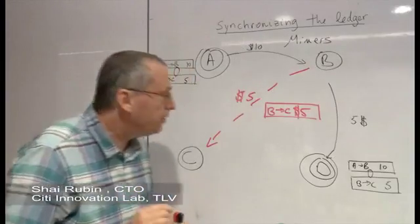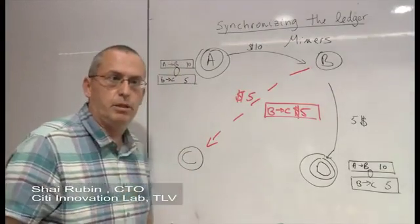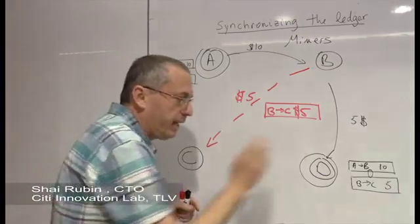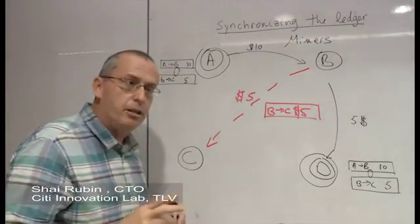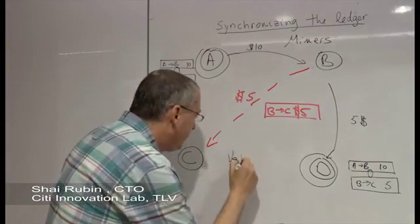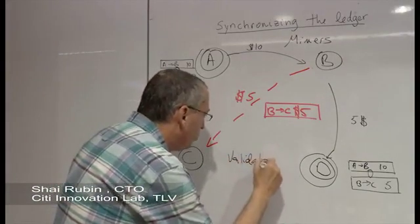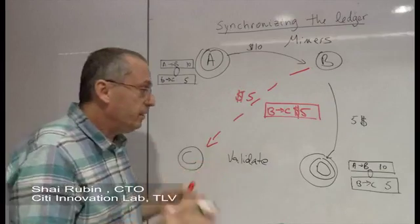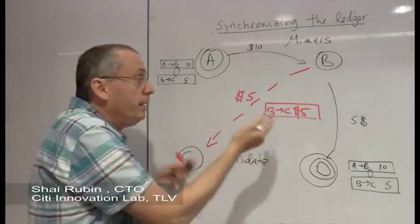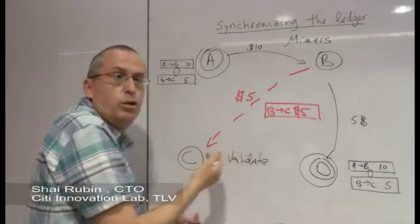Let's try to understand what it means to win the competition. In order to be the first that is able to take the transaction and add it to the ledger, a miner needs to do two things. First thing, needs to validate the new transaction. This is easy. The ledger is open, and you can immediately calculate whether B does have the funds in order to make the transfer.